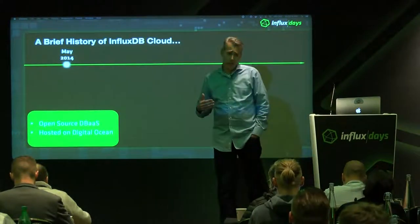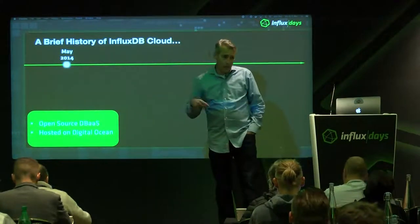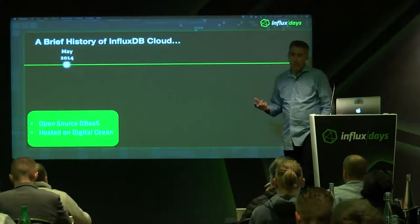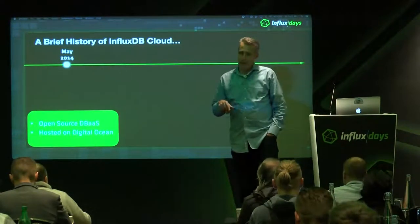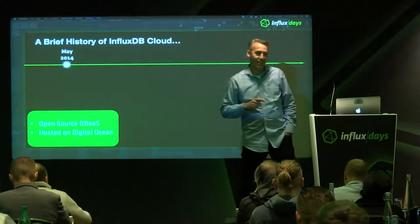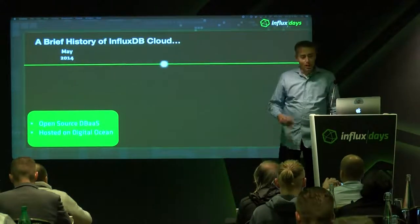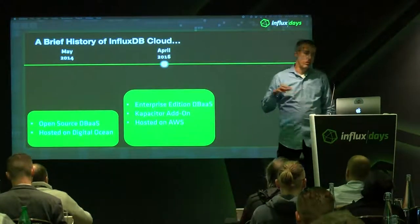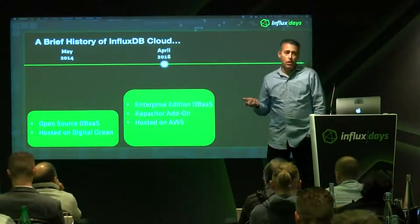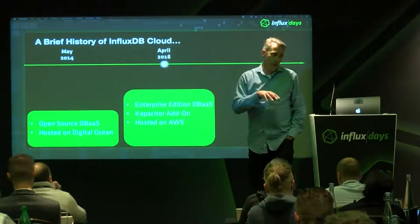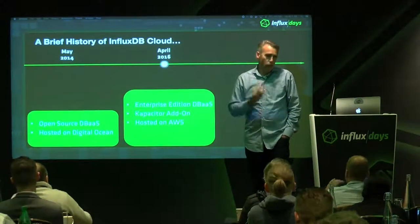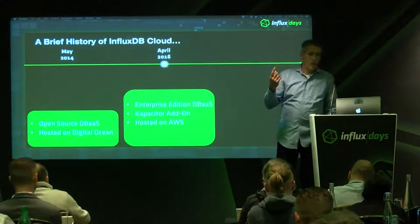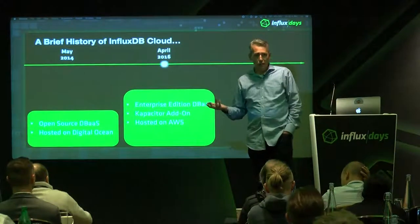We originally launched InfluxDB open source hosted on Digital Ocean in 2014. We got a lot of feedback that more people would come and buy the service if we weren't on Digital Ocean. So we moved the entire cloud service from Digital Ocean onto AWS and also launched the enterprise edition at the same time. Previously you only had access to open source — essentially a single node running on Digital Ocean which we hosted and managed for you — and you were required to download and use the CLI.